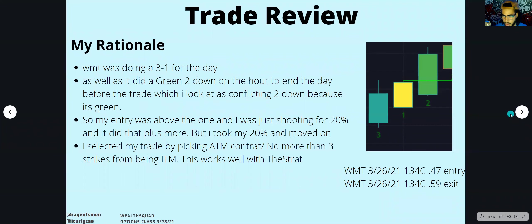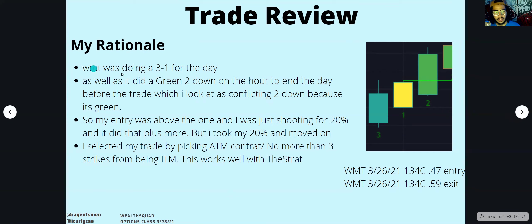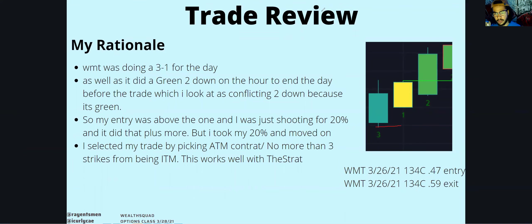Here's a trade I did a while back. I was looking at Walmart — it was doing a 3-1 on the daily, and it also did a green two-down on the hour to end the day. A green two-down is a conflicting candle because it broke below the low of a previous candle but was green instead of red. My entry was above the one, shooting for just 20 percent. It did that plus more, but I took profit at 20 percent and moved on. I selected an at-the-money contract no more than three strikes from being in the money.